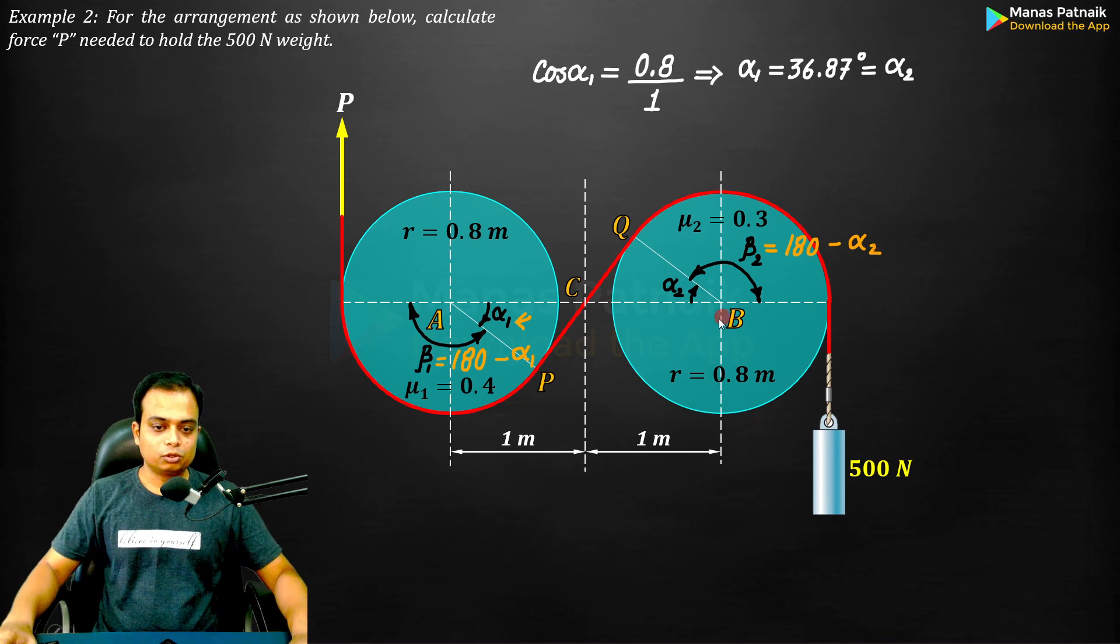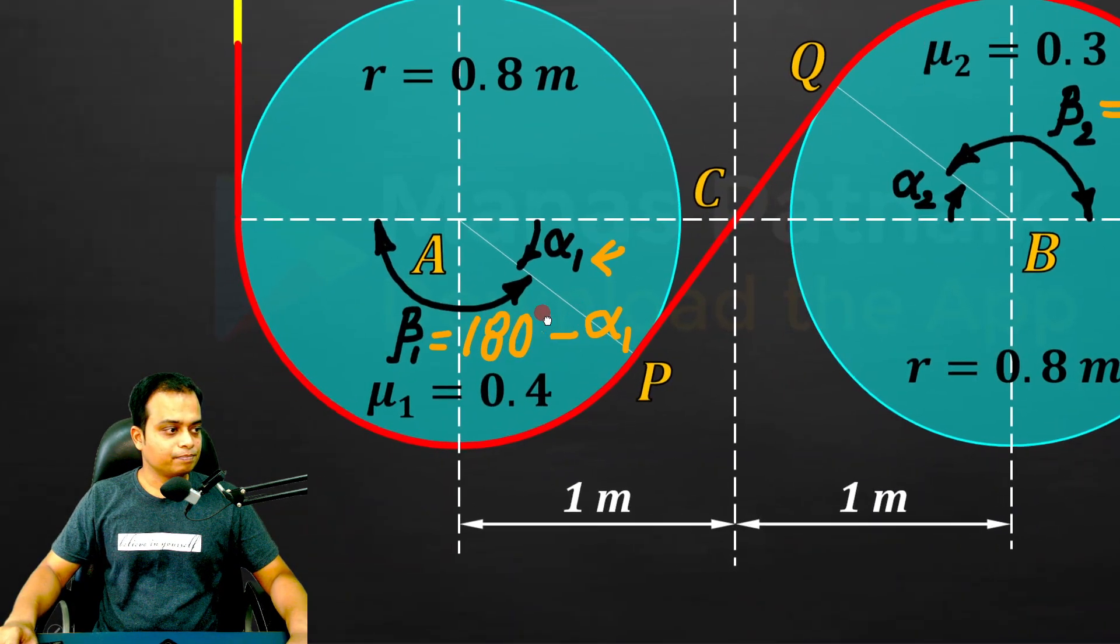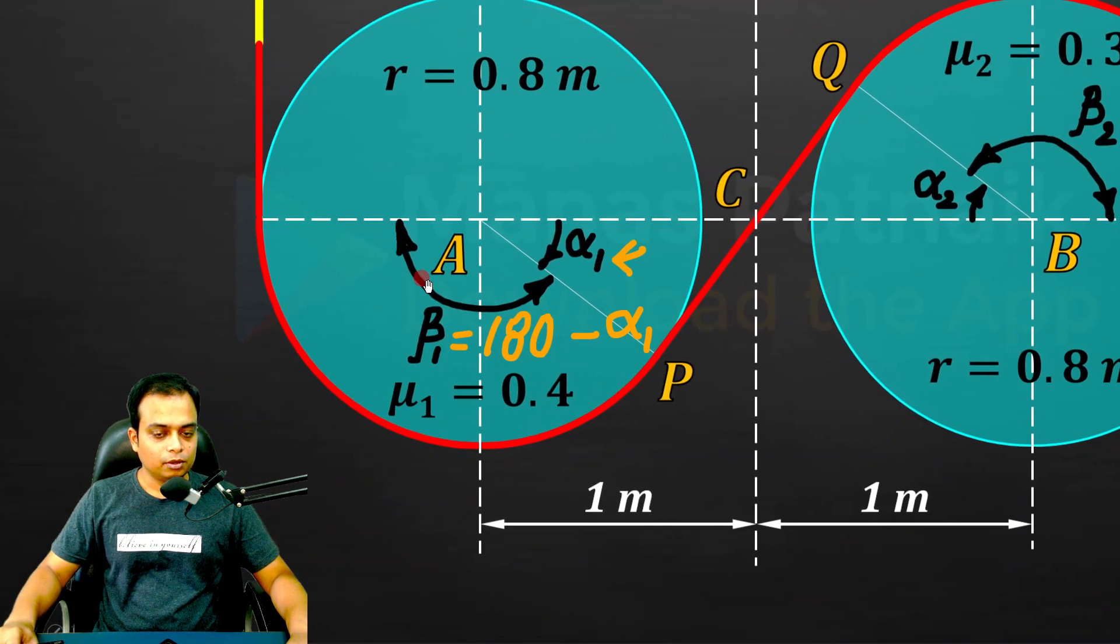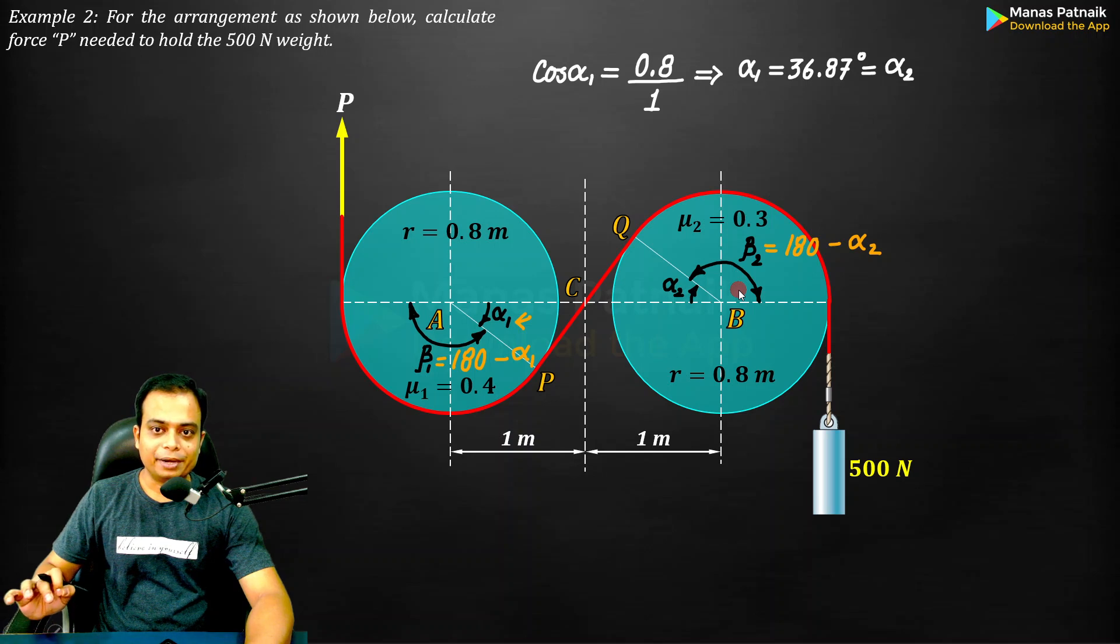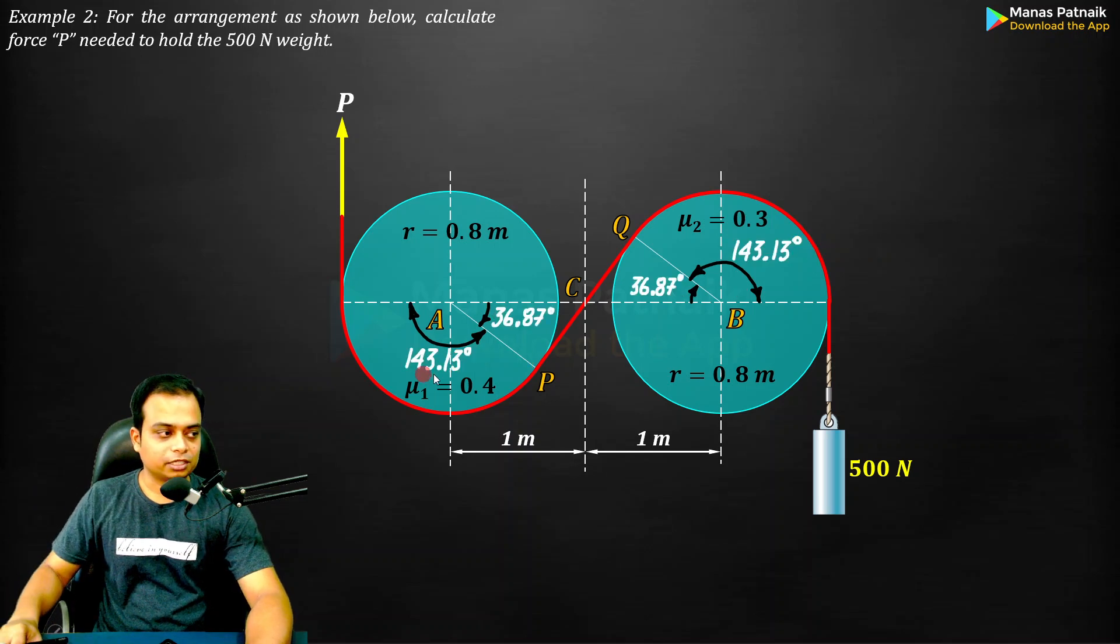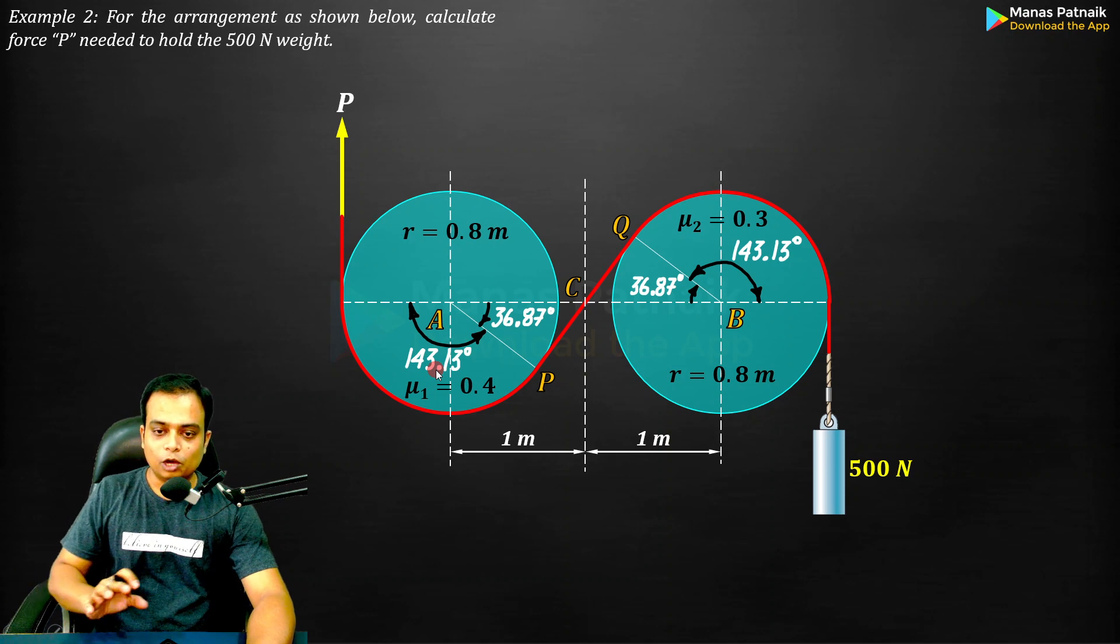Let me zoom in so you can have a clearer picture. Beta 1: 180 minus alpha 1 gives you beta 1, same way beta 2. Let me update the figure. Just doing the math, this is what you get.